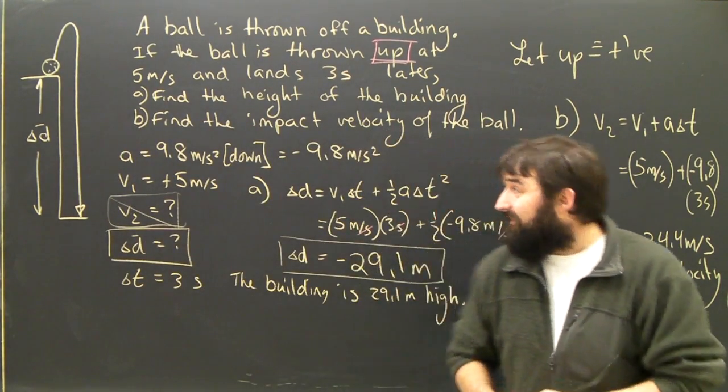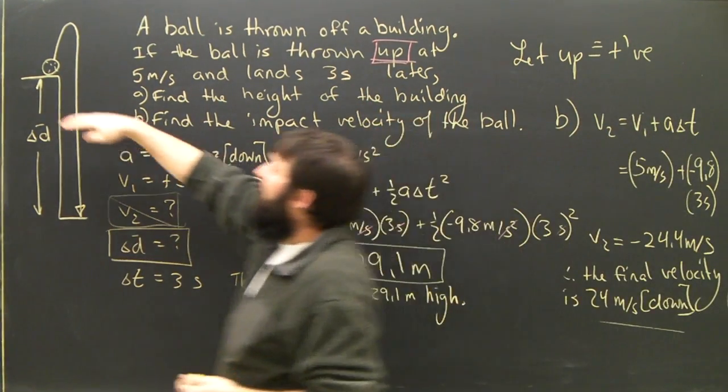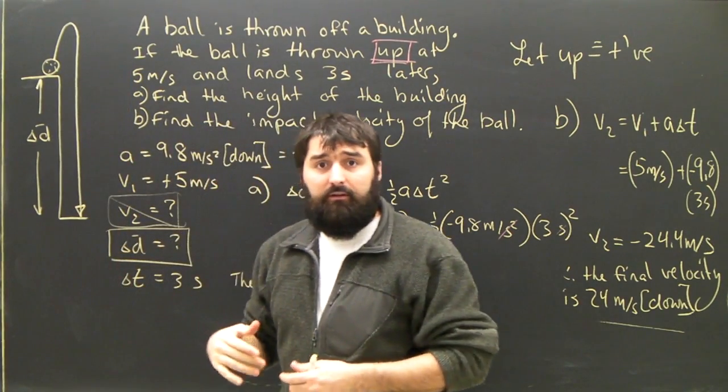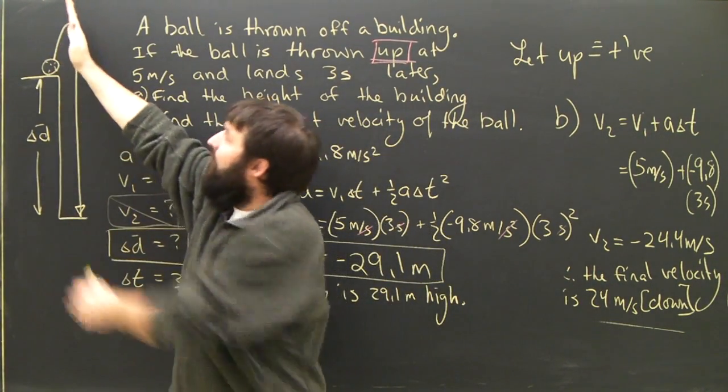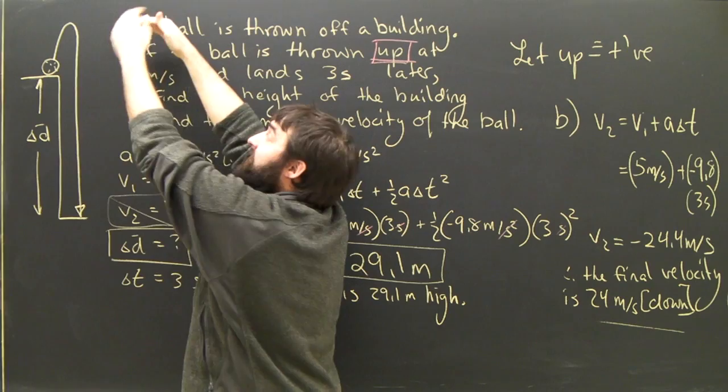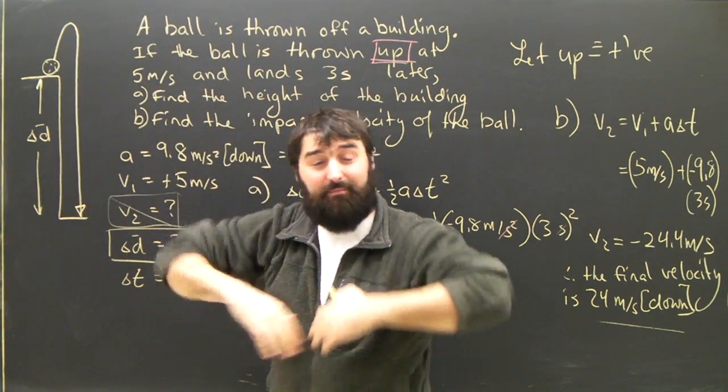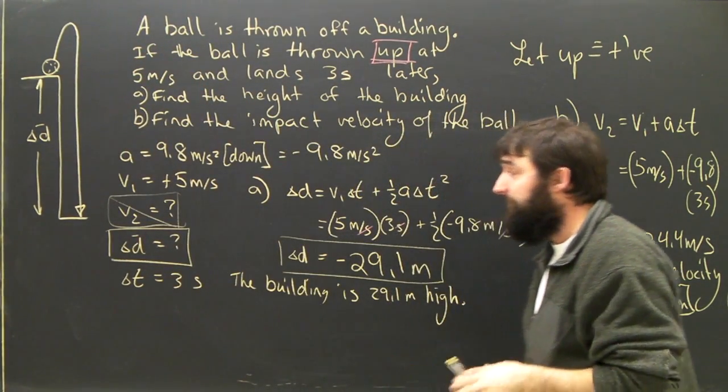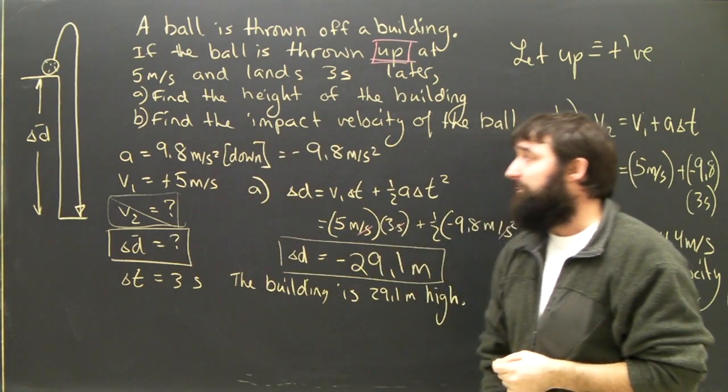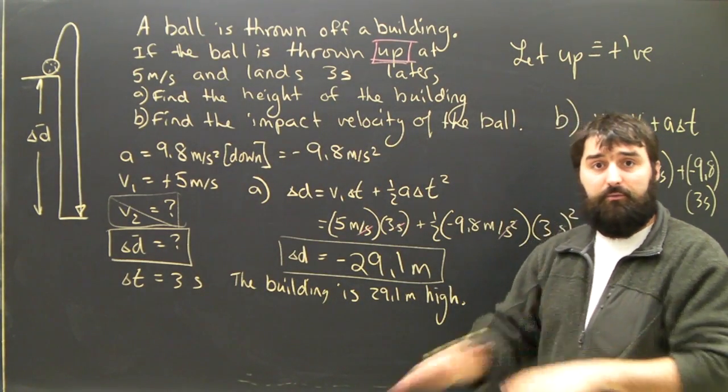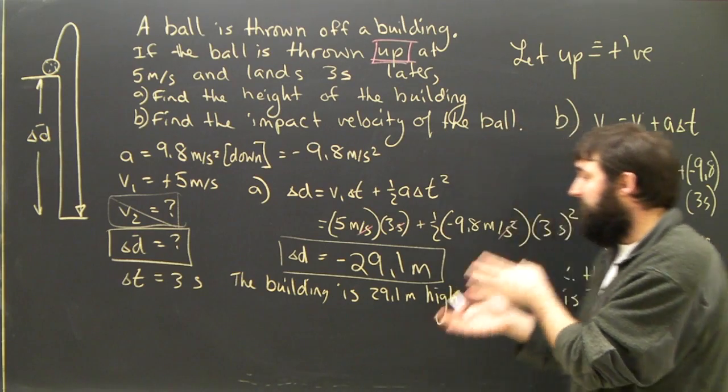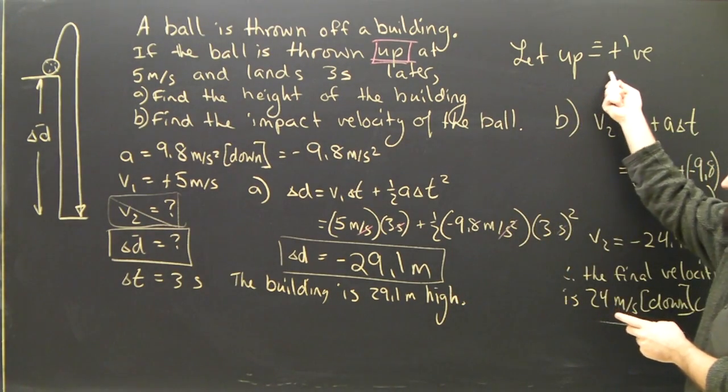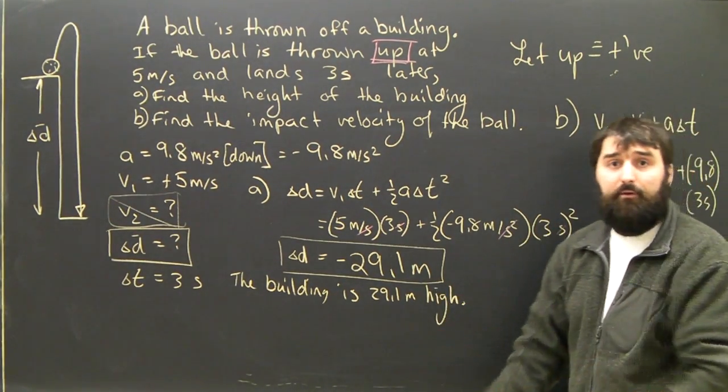Notice, again, that it doesn't matter how high it went. I didn't care how much distance it covered. For some reason, students like to find out how high it went and then try again to figure out how far it fell from the very top. It all has to work. I don't know why people do that. Just follow the same system. Write down all five givens. Which one do you need? Which one do you not care about? Pick the formula. Dump it in. As long as you have your signs right, the answer will pop in properly.